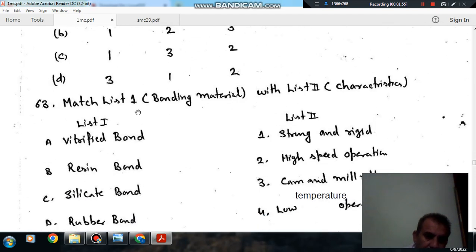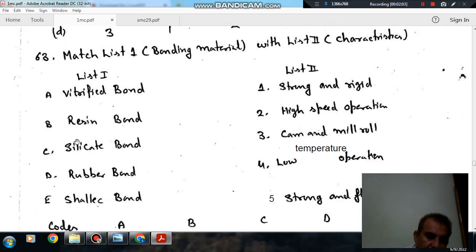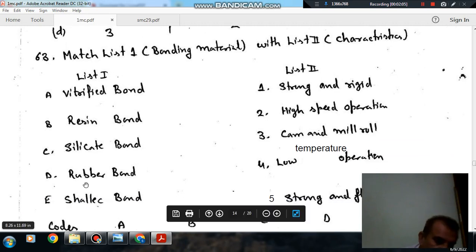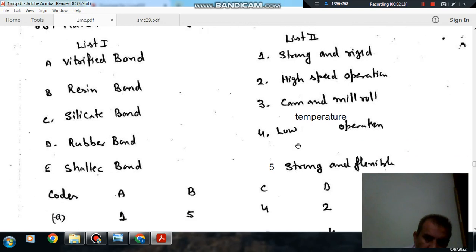Question number 63. Match list 1 bonding material with list 2 characteristics. List 1: A vitrified bond, B resin bond, C silicate bond, D rubber bond, E shellac bond. And list 2 these are the characteristics: strong and rigid, high speed operation, cam and mill roll, low temperature operation, strong and flexible.